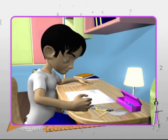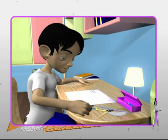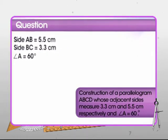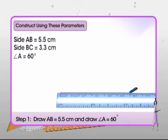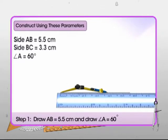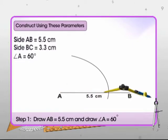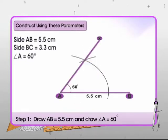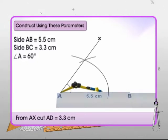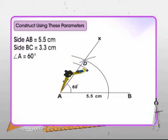Johnny is all set to do constructions with his geometrical tools. Here is the first construction: when two adjacent sides and one angle of a parallelogram are given. First, draw side AB of length 5.5 centimeters. Then at point A, draw an angle measuring 60 degrees, so angle XAB is 60 degrees. Now cut off AD equal to 3.3 centimeters on AX.